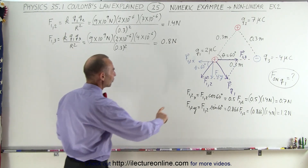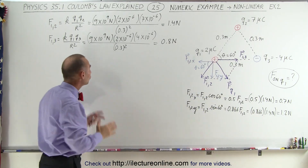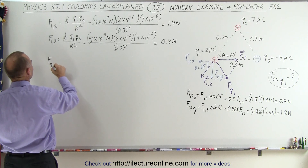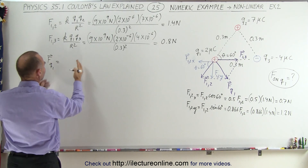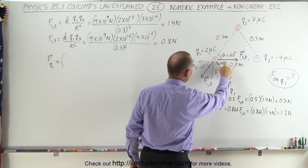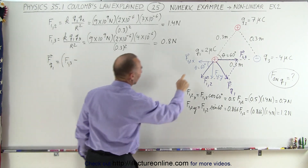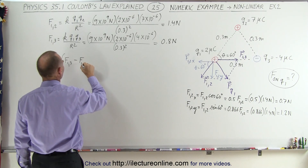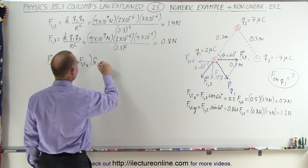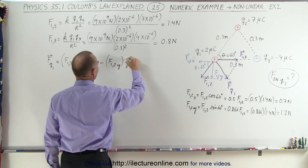Now that we have the two components of F1,2 and we have F1,3, which points in the X direction, we're ready to add the vectors. The F on Q1 is equal to the sum of the X components plus the sum of the Y components. We have F1,3 pointing in the positive X direction, minus F1,2 in the X direction — that's in the X direction — and then minus F1,2 in the Y direction, because it's pointing downward, times Y-hat.